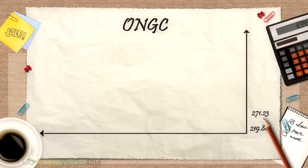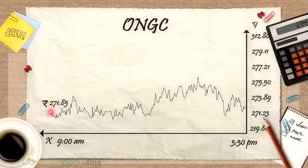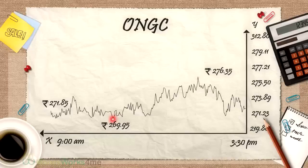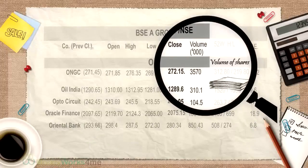What this means is that ONGC was first traded at Rs. 271.85. During the course of the day, its price reached a maximum of Rs. 276.35 and a minimum of Rs. 269.95, before finally closing at Rs. 272.15. The figure after that signifies the volume of shares that was traded throughout the day, or turnover.